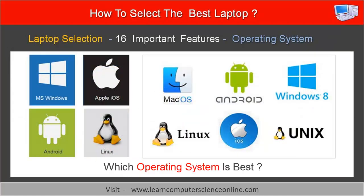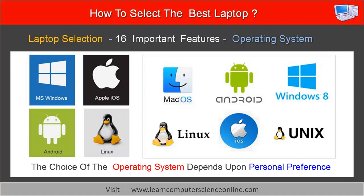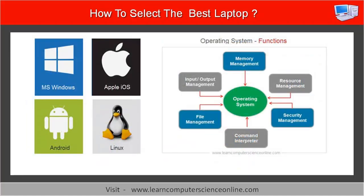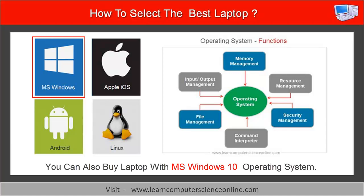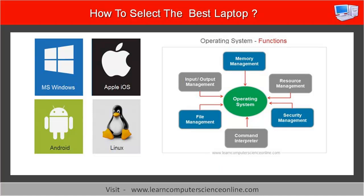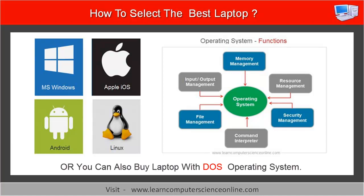Let us now move on to the next important feature, and that is the operating system. The choice of operating system is decided by personal preferences. For example, some users are very comfortable with Windows operating system based computers, whereas some users are die-hard fans of Apple devices with Mac iOS as operating system. For Windows based systems, you can either opt for Windows 10, or buy a laptop with only DOS operating system and then install any other previous version of Windows such as Windows 7 or Windows 8.